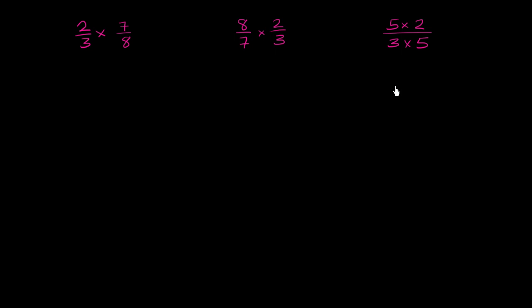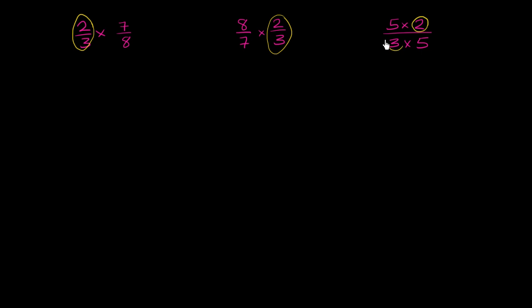Now you might have taken a shot at it. I'll give you a little bit of a hint in case you had trouble. All of these involve multiplying something by 2/3. You see a 2/3 here, and a 2/3 here, and it might not be as obvious, but you also see a 2/3 here. Let me rewrite that to make it a little bit clearer.